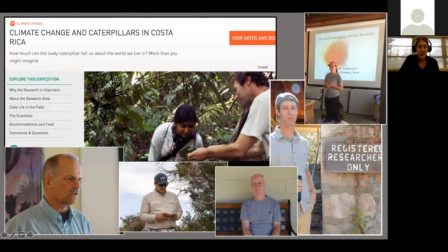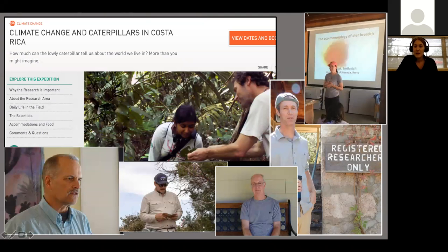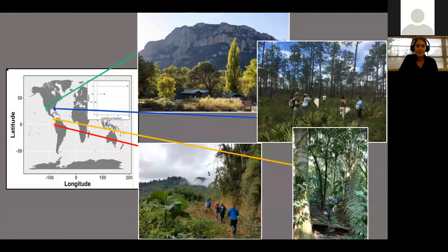We have taxonomists helping us with naming species in our data sets, chemical ecologists like Chris Jeffery who runs the chemistry on plant data, and Doug Tallamy who studies the relationship of herbivores and birds — how urban development is decreasing herbivores and affecting bird populations. Angela Smelanich, Lee's wife, studies eco-immunology, specifically caterpillar immune systems and how their diet affects that.